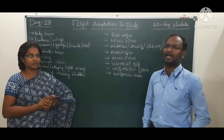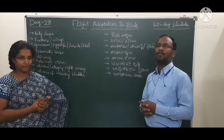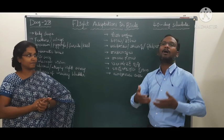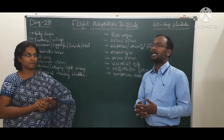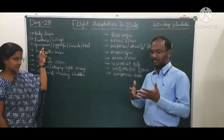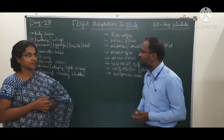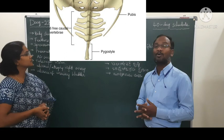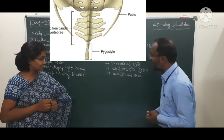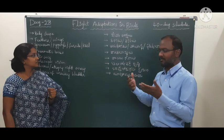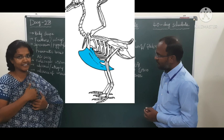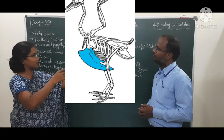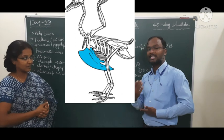The synsacrum gives strength to the hind limbs. Since the forelimbs of birds are modified into wings, the hind limbs are very essential to bear the weight of the body when the bird stands on land. Similarly, the pygostyle is the fusion of all caudal bones, giving support to the tail feathers. The keel, near the mid-thoracic sternum bone, provides space for the attachment of flight muscles.